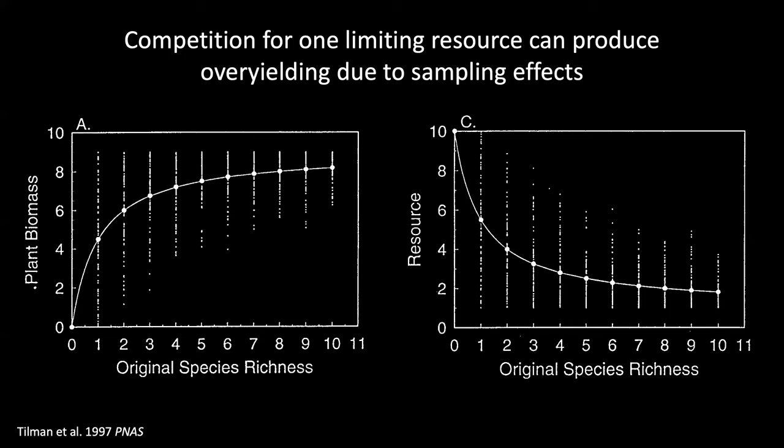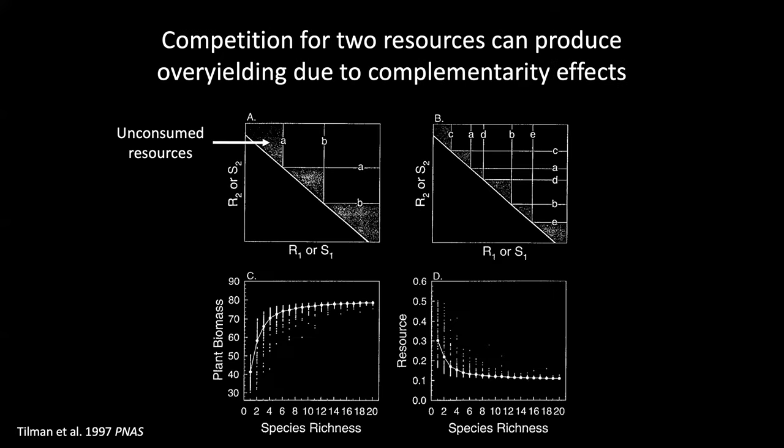Subsequent theoretical work argued that these should be called selection effects rather than sampling effects, given that they were necessarily the outcome of species interactions rather than merely a statistical sampling process. That is, although there is a greater probability of including a highly productive species at high levels of diversity, there's also a greater probability of including the least productive species. For there to be a diversity effect, the most productive species must systematically outcompete the least productive species in the diverse communities. Early theoretical work also showed that biodiversity effects could arise from complementarity effects, which were separate from species identity effects.